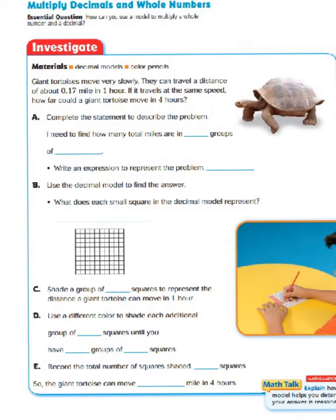To get started, let's take a look at what we're going to need. Our materials is going to be a decimal model, which is going to be included in your book, and colored pencils. Of course, you can use crayons, markers, whatever you have. You will need four different colors.